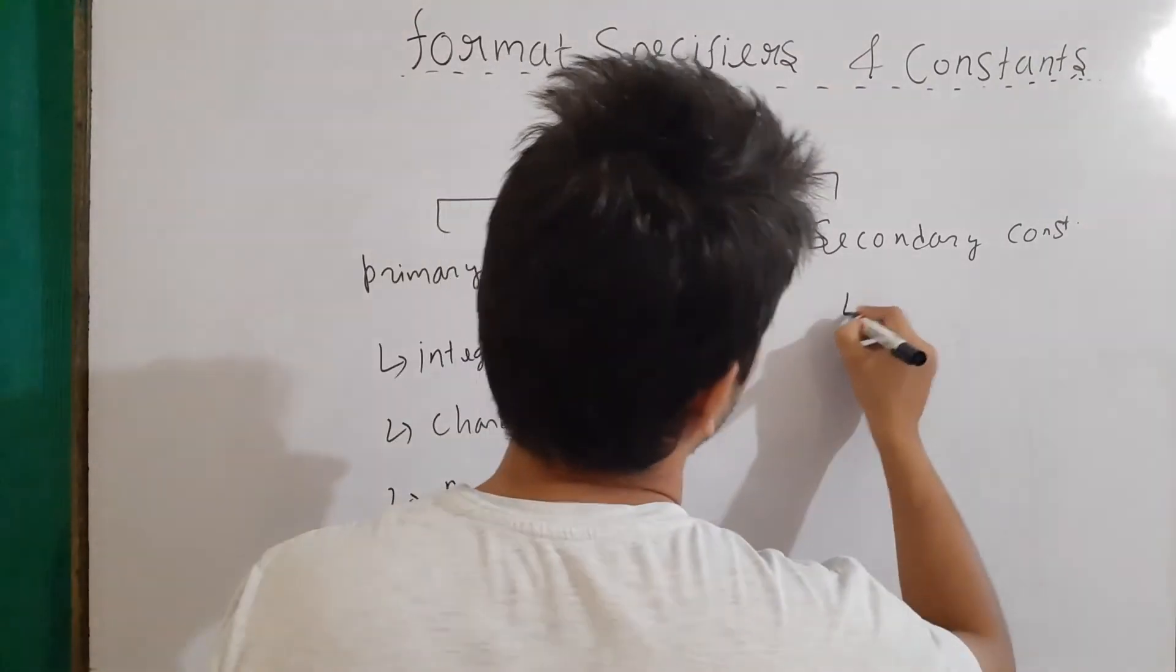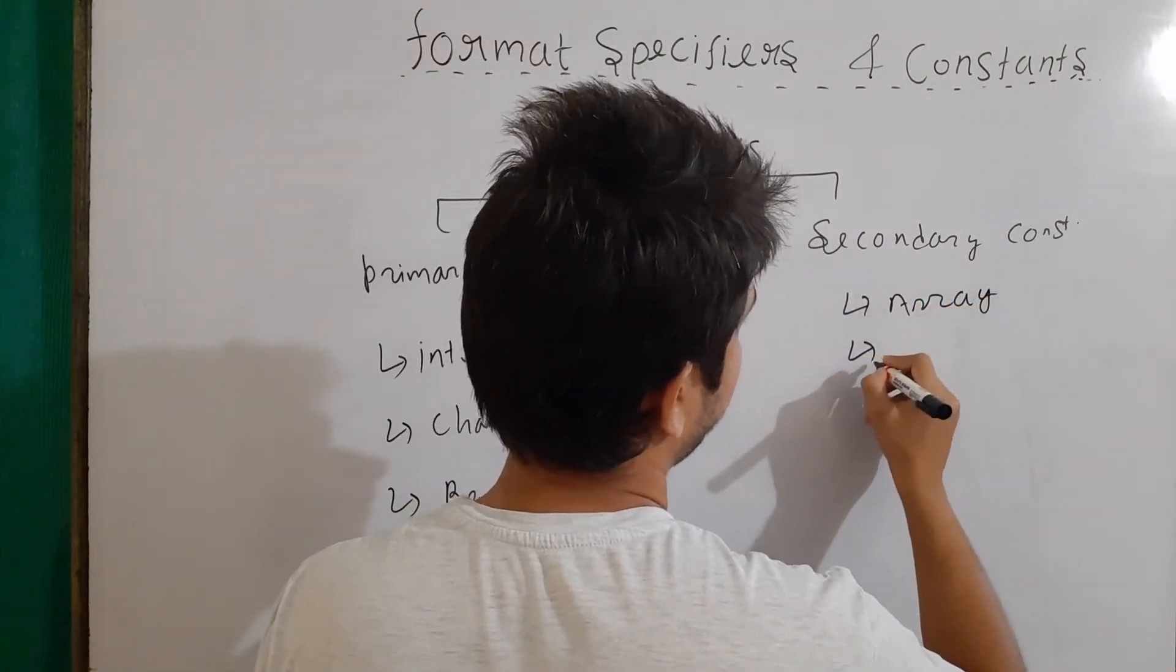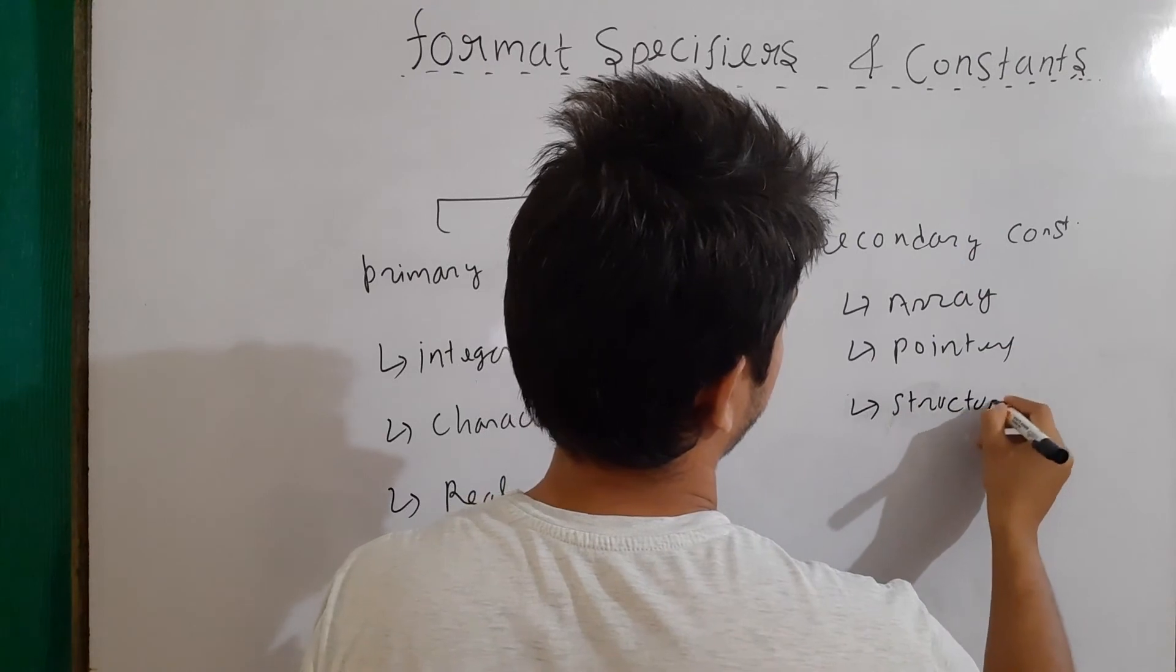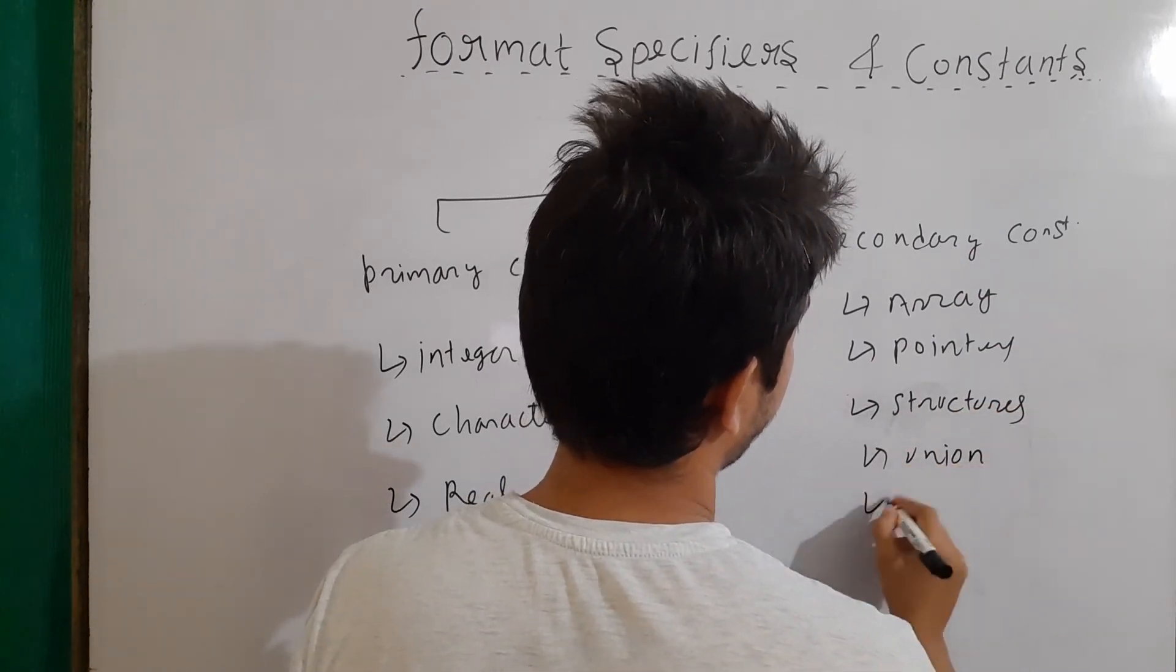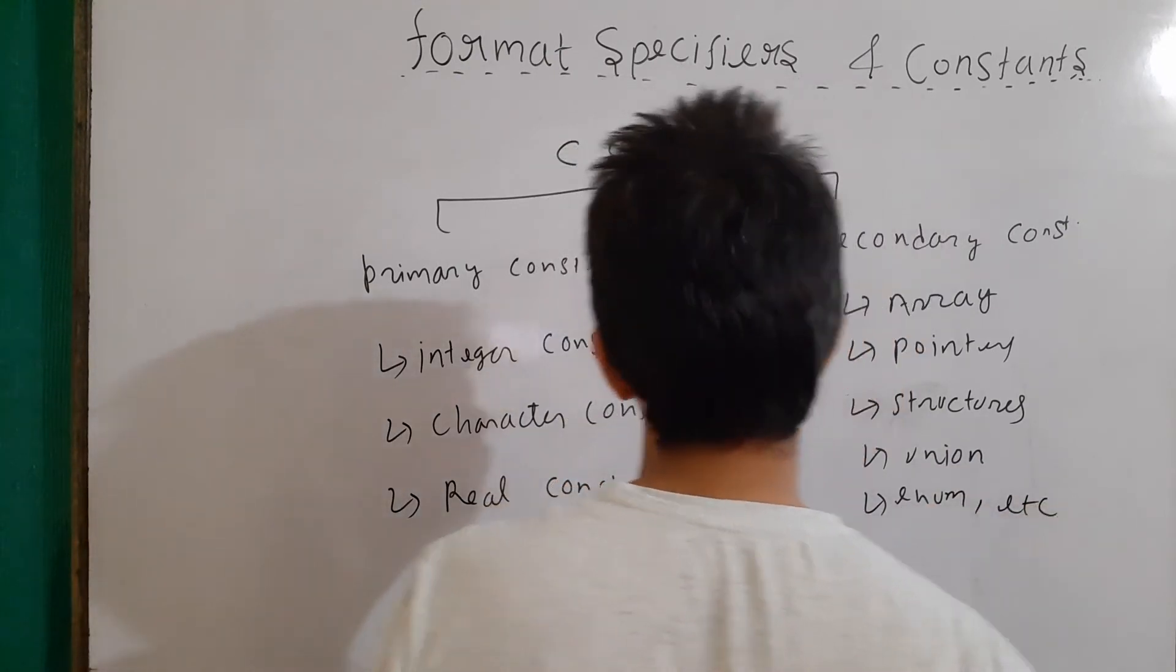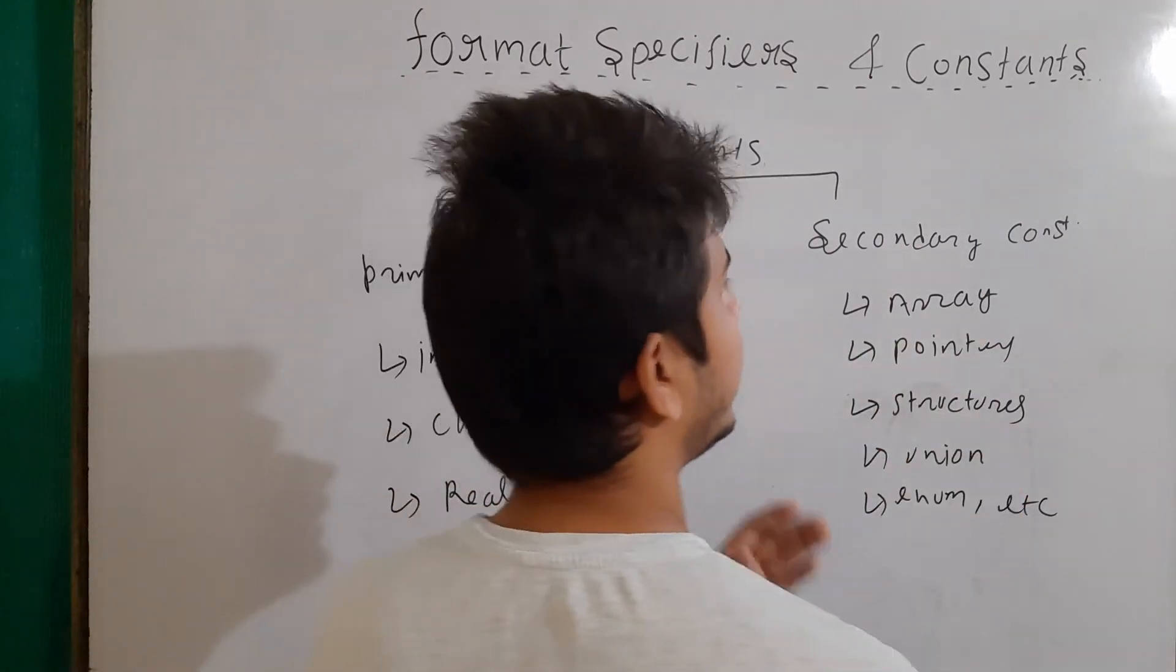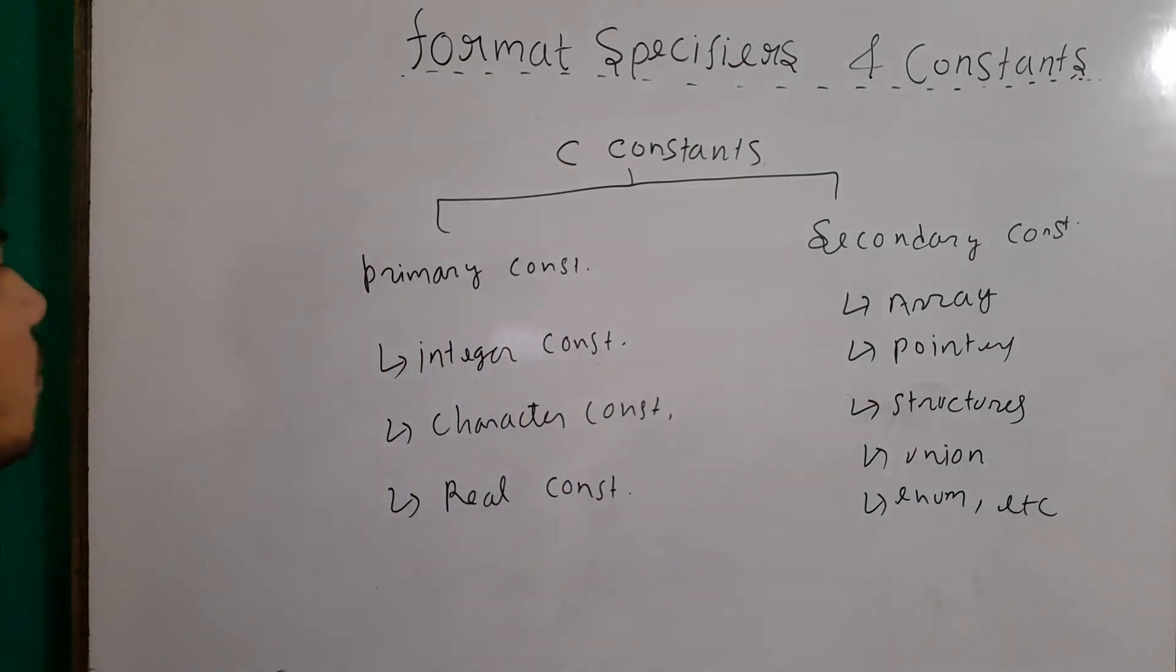And in secondary constants, we have array, then pointers, structures, union, enum, and many more. So basically secondary constants are made by the primary constant. We will talk about the secondary constant in the later videos. But for now, let's focus on the primary constants only.